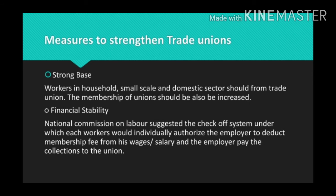The next measure is financial stability. To improve the financial condition of the union, the minimum subscription should be raised. Every member in the trade union shall pay a minimum subscription, and this should be increased up to a certain amount. The National Commission on Labour suggested the check-off system, under which each worker would individually authorize the employer to deduct membership fees from his wages or salary, and the employer would pay the collection to the union.